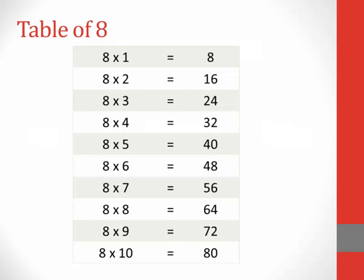Table of 8. 8 1s are 8, 8 2s are 16, 8 3s are 24, 8 4s are 32, 8 5s are 40, 8 6s are 48, 8 7s are 56, 8 8s are 64, 8 9s are 72, 8 10s are 80.